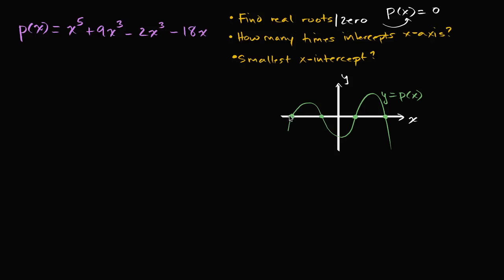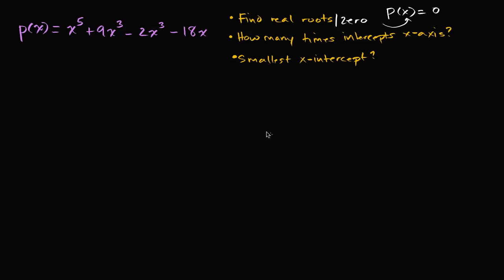It's going to be the same number of real roots, or the same number of real zeros we have. And then they want us to figure out the smallest of those x-intercepts for this particular polynomial. So we really want to solve p of x is equal to zero.